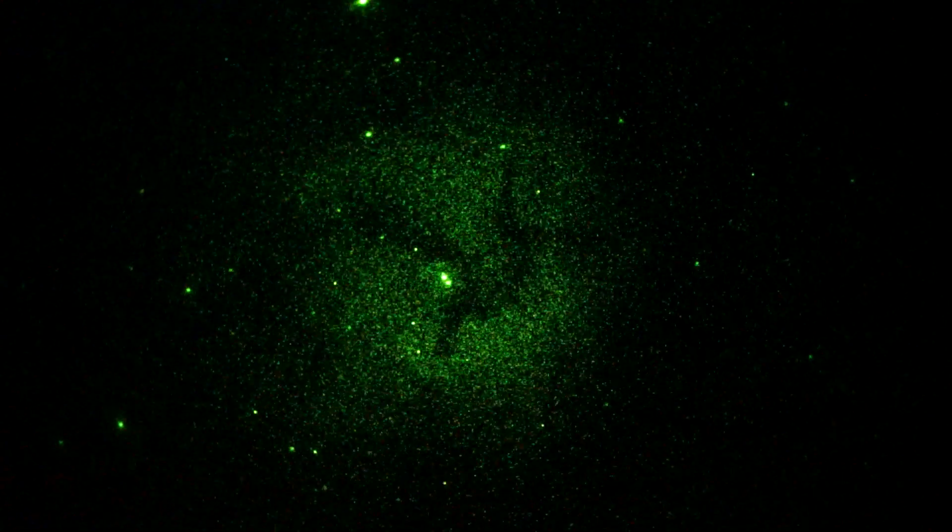You're seeing it through a Takahashi Mewlon 250 scope at 90 power, f9.2. Camera is a Sony A7 running pretty slow shutter speed, a sixth of a second shutter, 10,000 ISO. Gen 3 image intensifier and a 12 nanometer H-alpha filter.